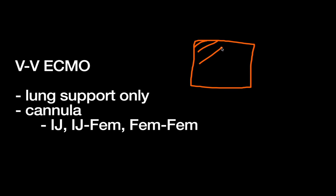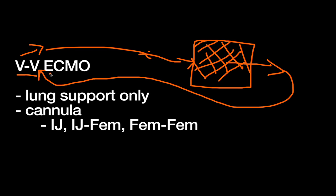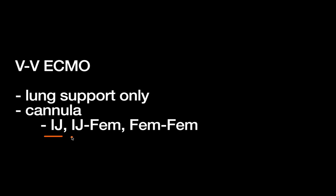ECMO stands for extracorporeal membrane oxygenation. There's a membrane that sits outside the patient — blood gets delivered from the patient, passes through the membrane, and then goes back. The membrane is responsible for both oxygenating the blood and removing CO2. In VV ECMO, the first V means blood comes from the vein into the circuit, and the second V means blood is delivered back into the vein — there's no bypass of the heart, so this is lung support only. Cannulas are typically in the IJ and femoral veins, both femoral veins, or a single-stage cannula in the right IJ.